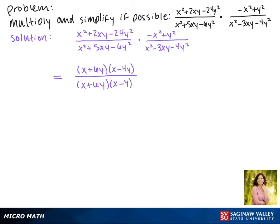Now in the numerator here, if we factor out that negative, we get x squared minus y squared, which is the difference of squares. So this gives us a negative times x plus y times x minus y.